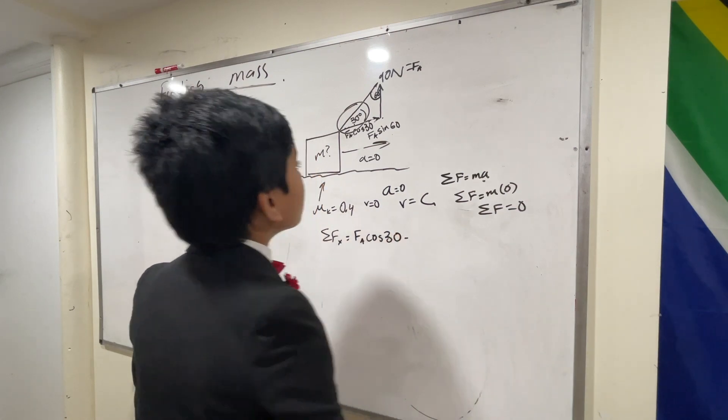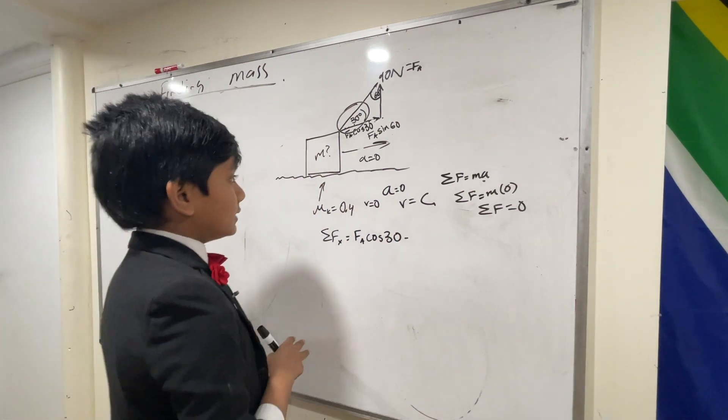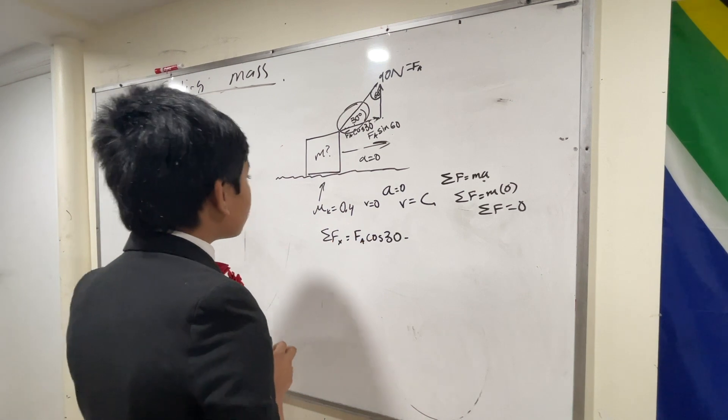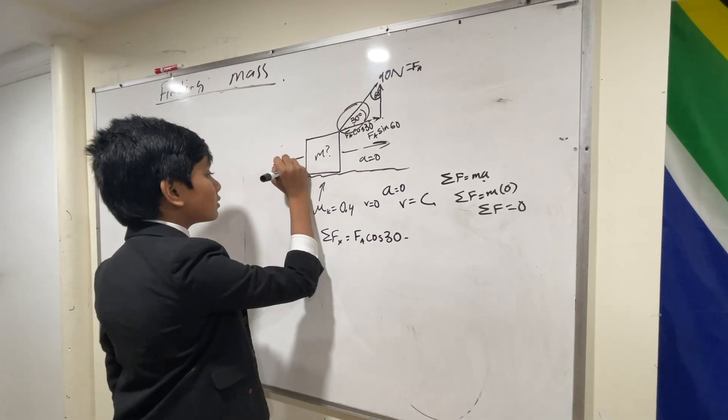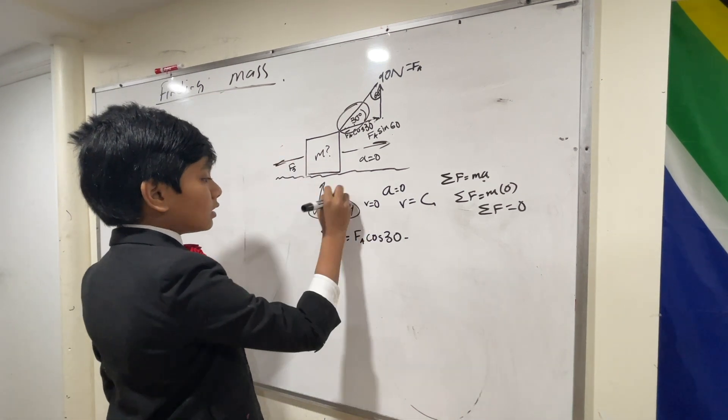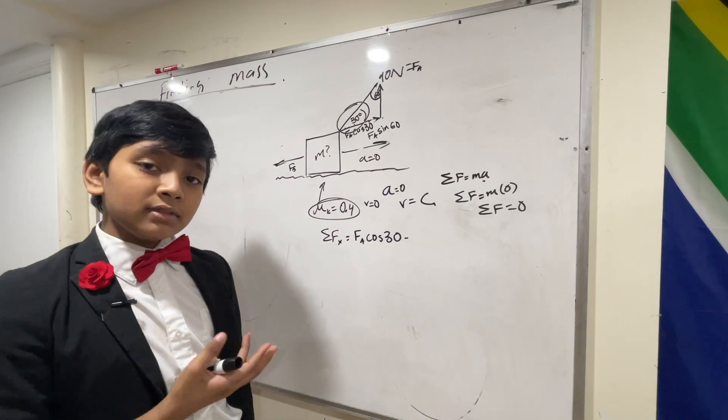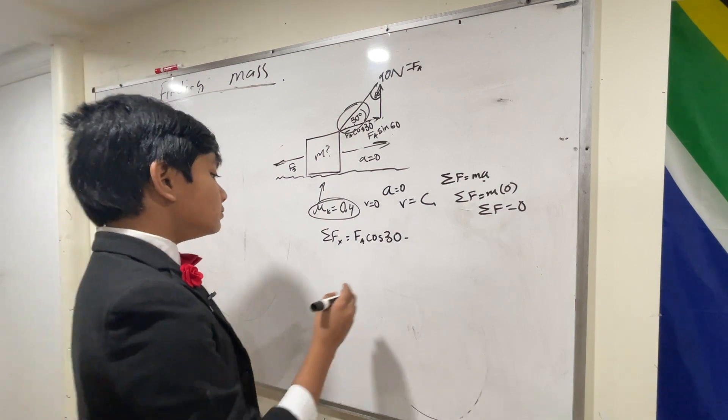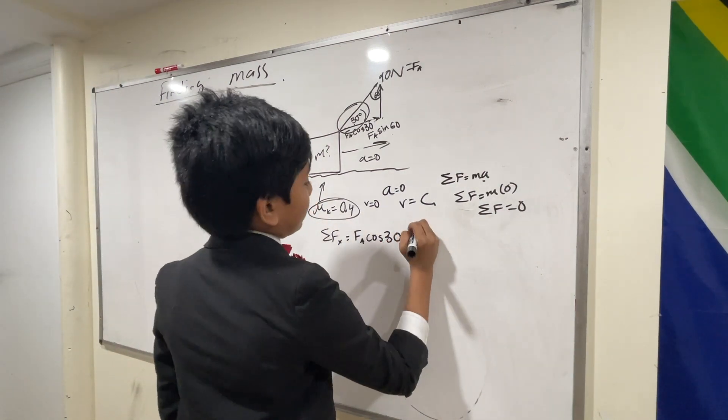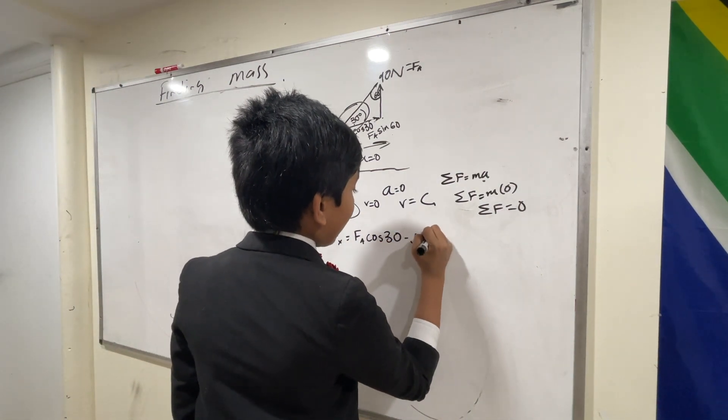And we subtract that from what is our other force. Well, that would be f f. If there was a mu k, if there was a coefficient of friction, then friction exists. And how do we write friction out? Mu k fn.